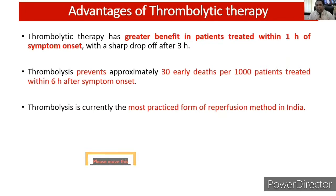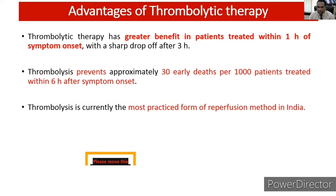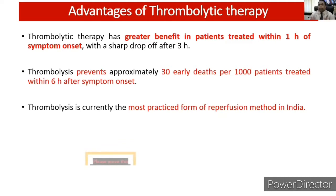Regarding advantages of thrombolytic therapy: there is great benefit if the patient is treated within one hour from symptom onset, with a sharp drop in benefit after three hours. If thrombolysis is given within half an hour to one hour, approximately 95 to 100 percent of the myocardium is salvaged. If given after three to four hours, approximately 60 to 70 percent of myocardium is lost. Early thrombolysis within six hours prevents approximately 3% of deaths. This modality is the most commonly practiced form of reperfusion in our country.